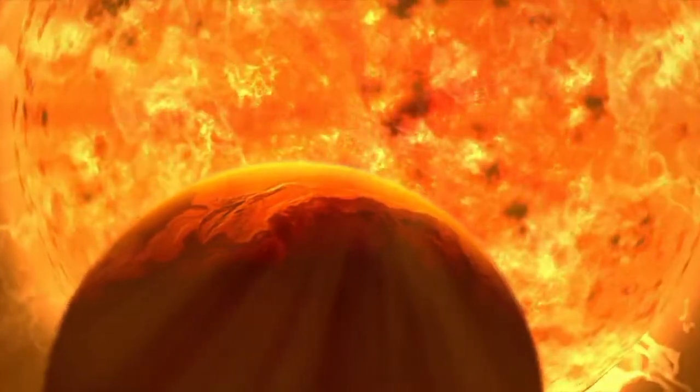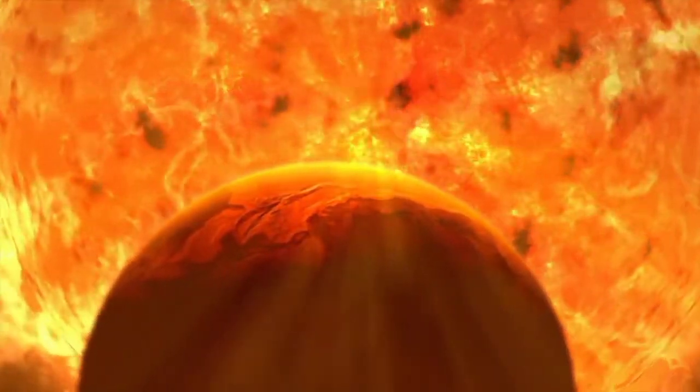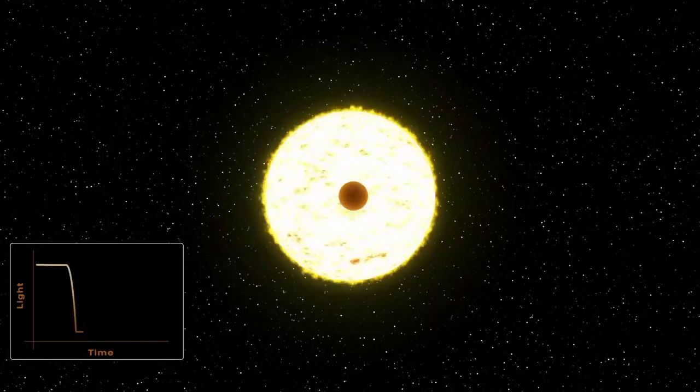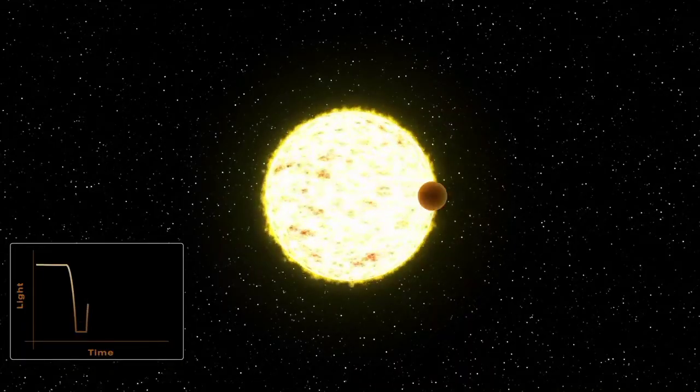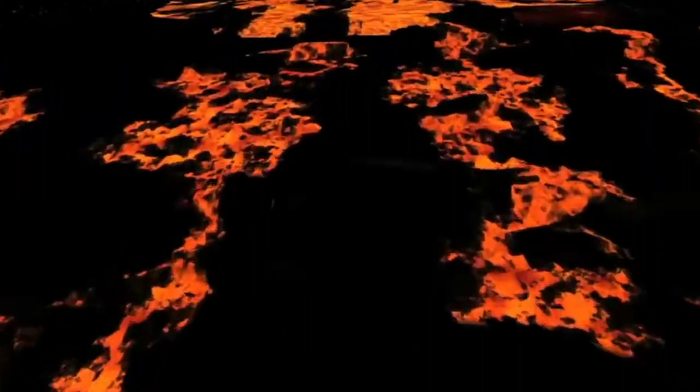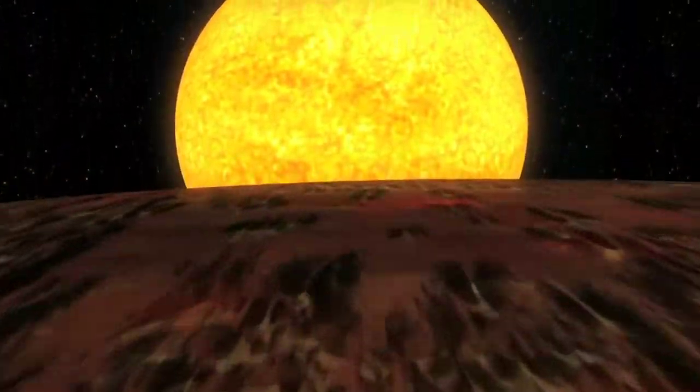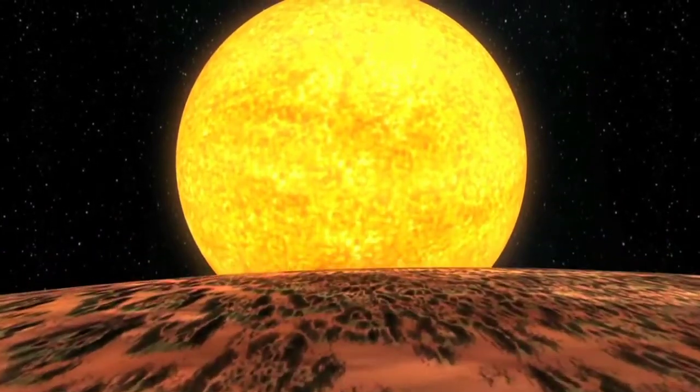It orbits an F-type star about 1.5 times more massive than our Sun. It's difficult to imagine what this arrangement would look like to any observer in the same system. The planet is so hot because it's an average of only 2.4 million kilometers from its star, and it's probably tidally locked to its star like other hot Jupiters and ultra-hot Jupiters.